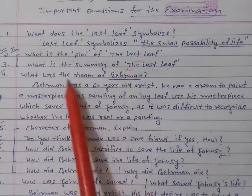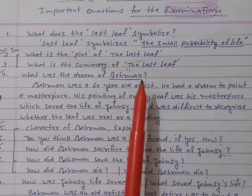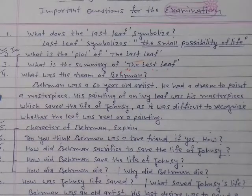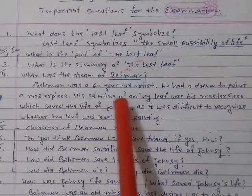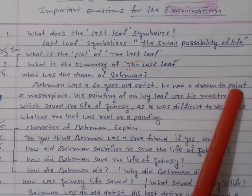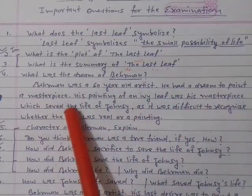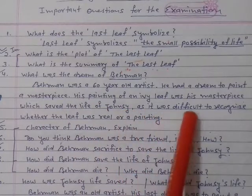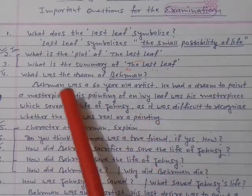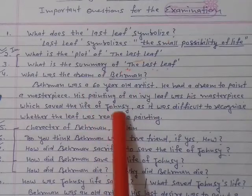The next question: what was the dream of Behrman? Behrman was a sixty-year-old artist. He had a dream to paint a masterpiece. His painting of an ivy leaf was his masterpiece, which saved the life of Johnsy, as it was difficult to recognize whether the leaf was real or simply a painting.